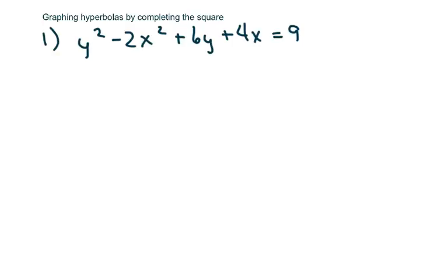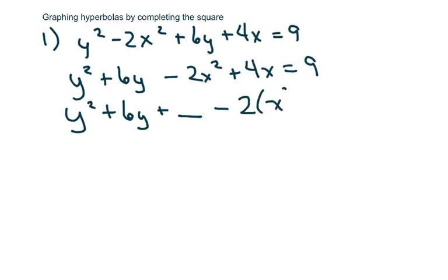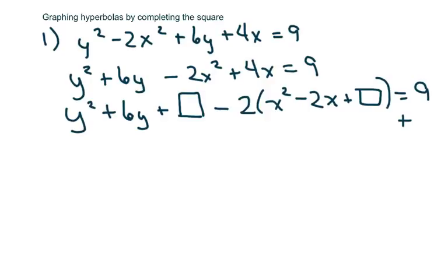Basically, when you see something like this, you want to group your y's together and your x's together, and keep your constant on the right side. Then we're going to — I call it — put a box. We're going to subtract minus two and put x squared minus two x plus a box, like I did before, plus box.